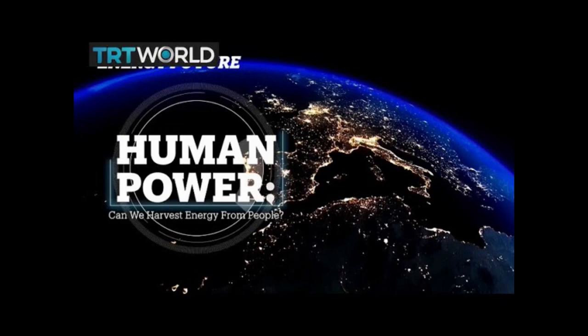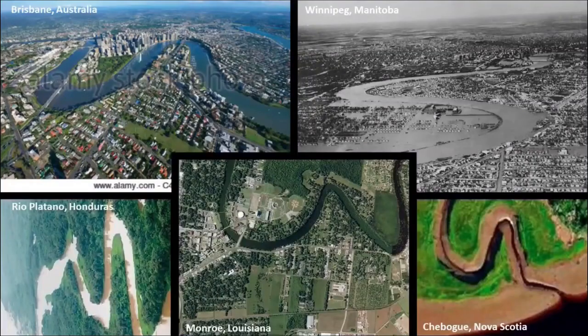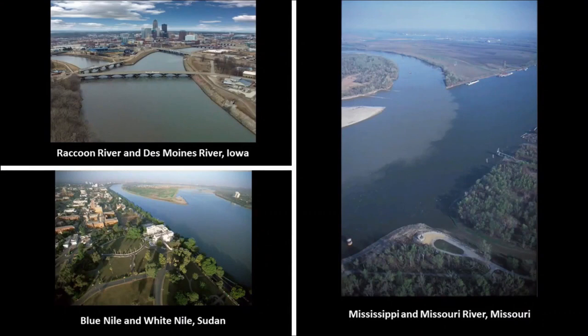Is there some kind of energy harvesting going on between us and the financial system we have been operating under for the last 100 to 200 years? And are rivers actually natural? I think they are man-made, considering that I consistently find the exact same snaky S-shaped rivers all over the world, including rivers in Australia, Manitoba, Honduras, Louisiana, and Nova Scotia. And I find the same similarity in appearance going on with river confluences, like shown here in Iowa, Missouri, and the Sudan in Africa.